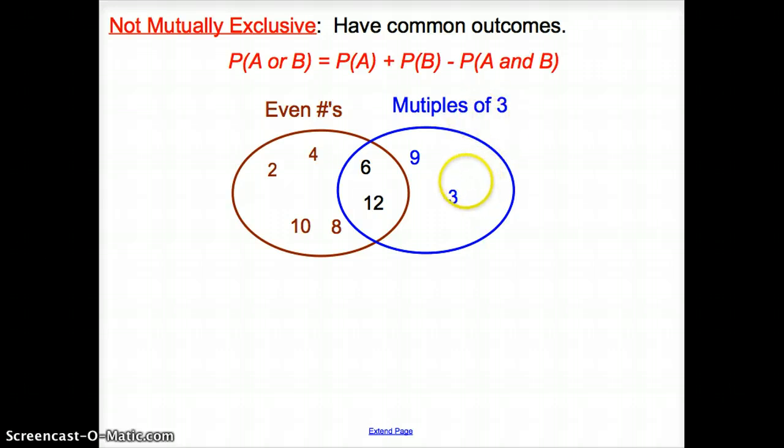Multiples of three would be three, six, nine, twelve. Well, are there any even numbers that are even numbers? We have two, four, six, eight, ten, and twelve. And multiples of three would be three, six, nine, twelve. What are in common? The six and the twelve.